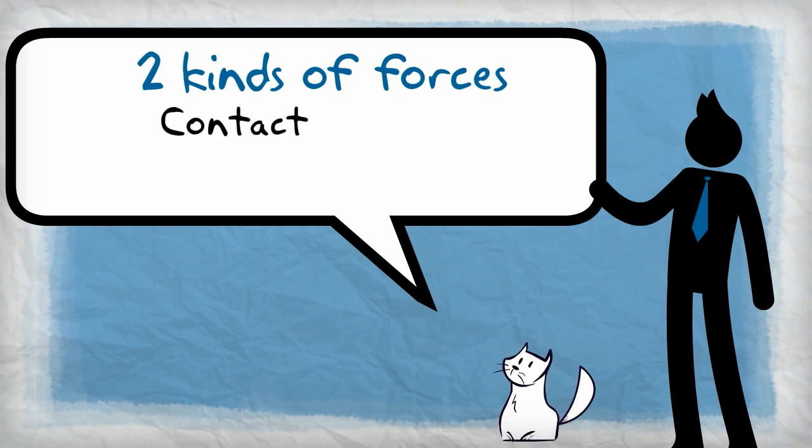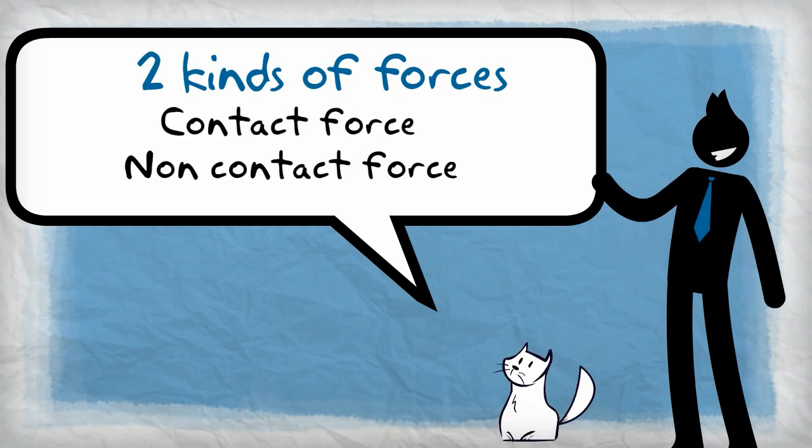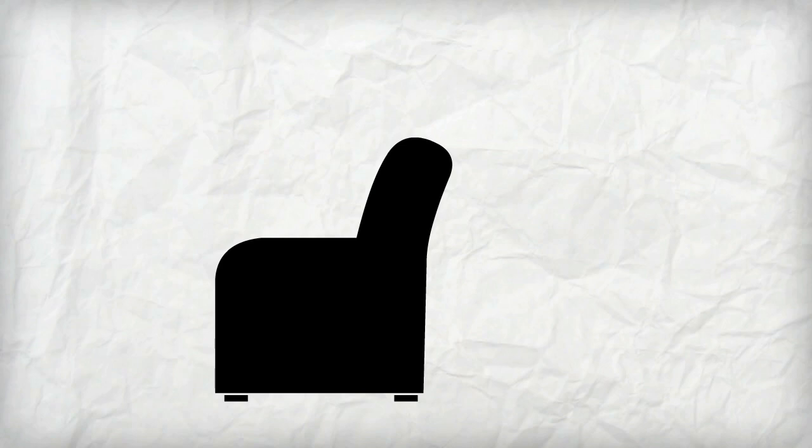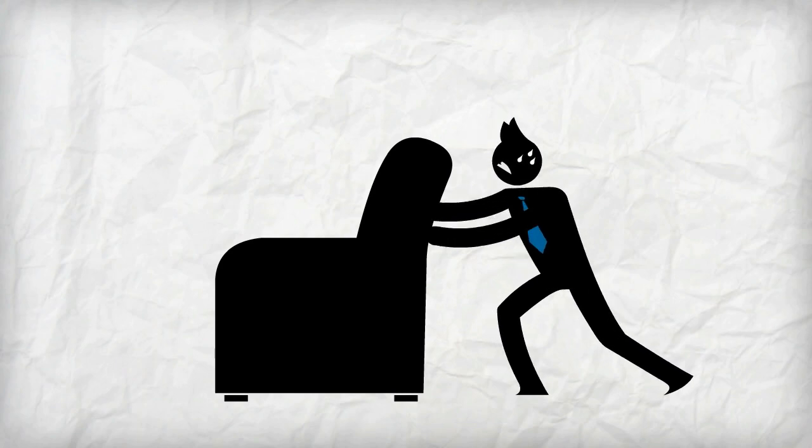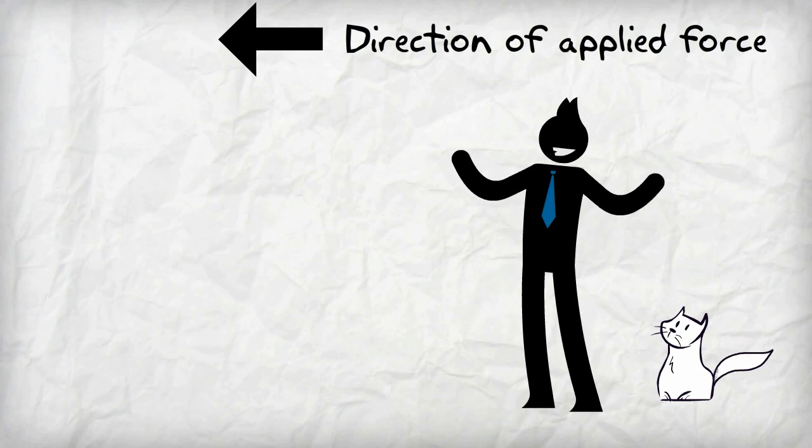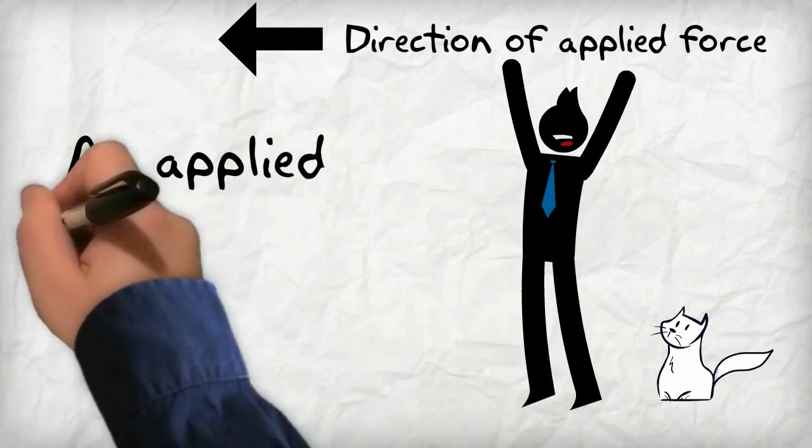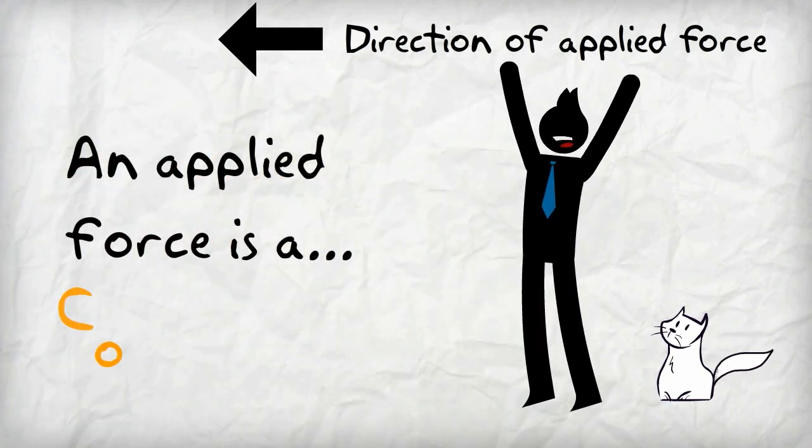There are two kinds of forces: contact force and non-contact force. When we push or pull an object, we have applied force to the object. The object will move in the direction of the applied force. An applied force is an example of contact force.